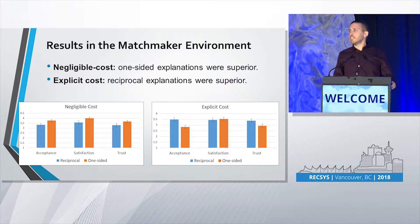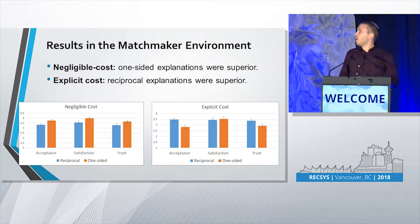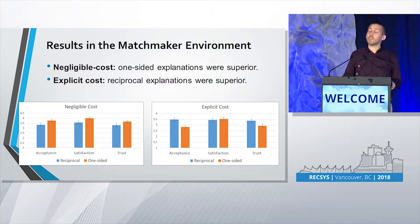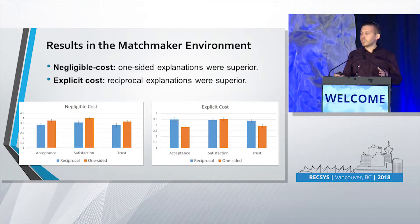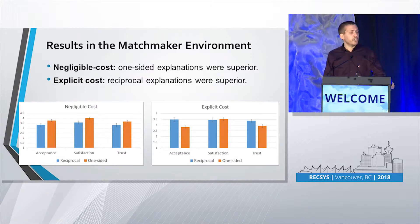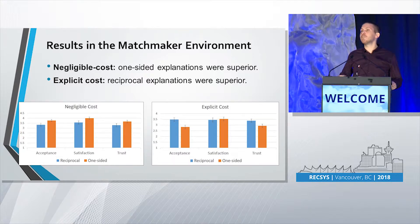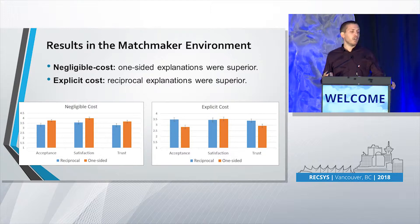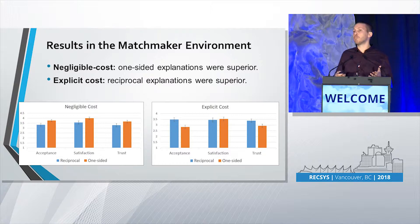The results we received in the two different settings were very different — actually opposites. In the negligible cost setting, we found that the one-sided explanations outperformed the reciprocal explanations. And in the explicit cost setting, we found that the reciprocal explanations were superior both in acceptance of the recommendations and also in the trust of the users in the system. So the reciprocal explanations performed better when there was cost involved in accepting the recommendation.